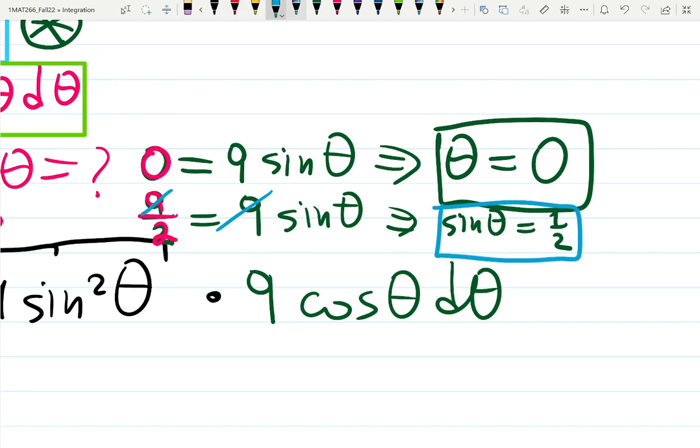That means sin θ = 1/2. When sin θ is 1/2, theta is π/6. That's reviewing of the angles, trigonometric angles. That's called inverse functions.